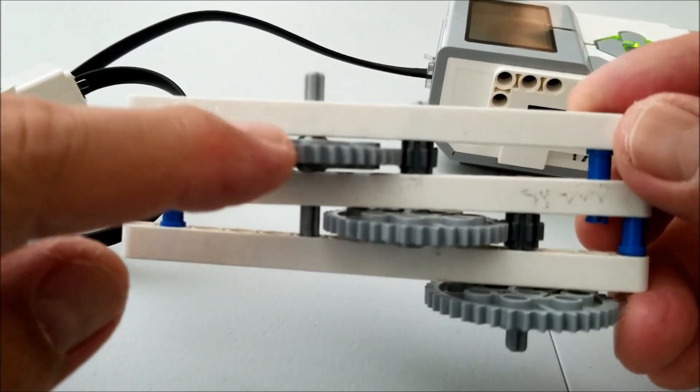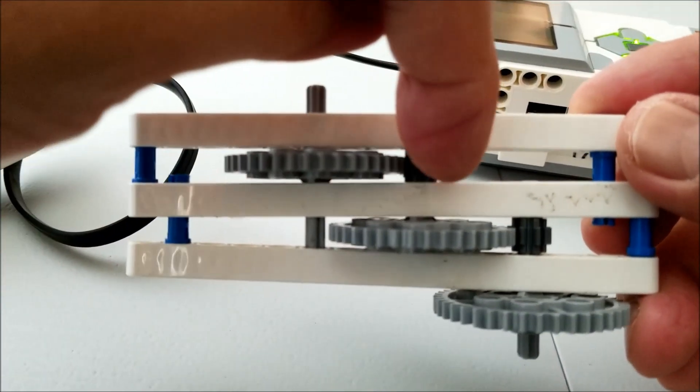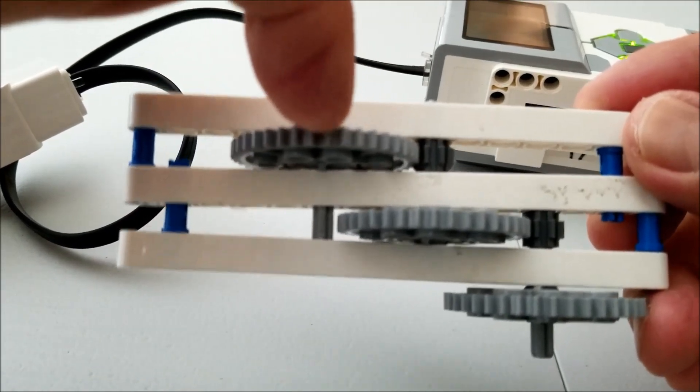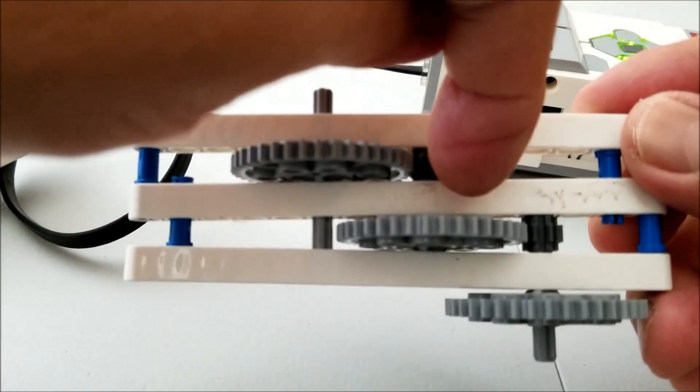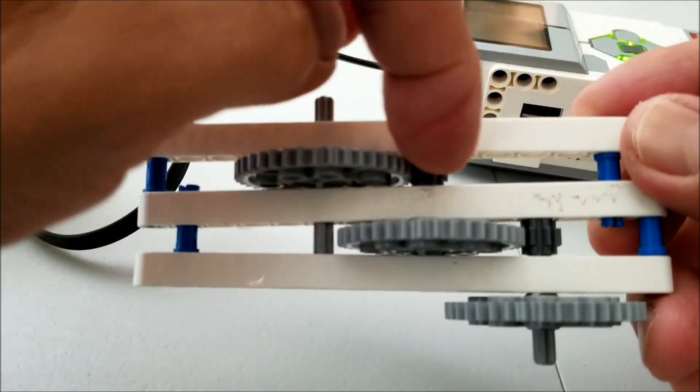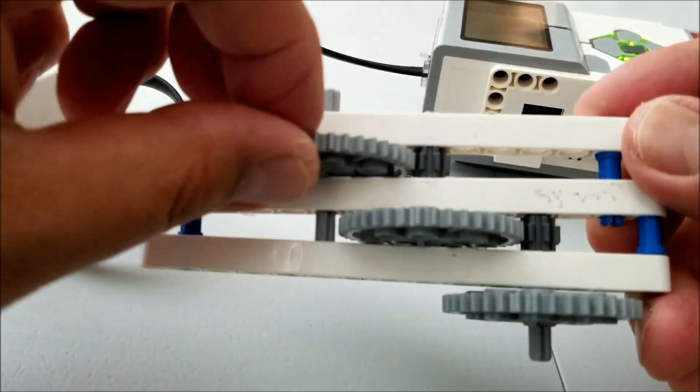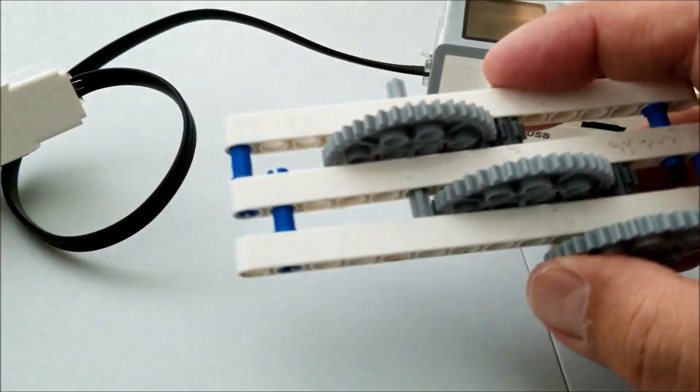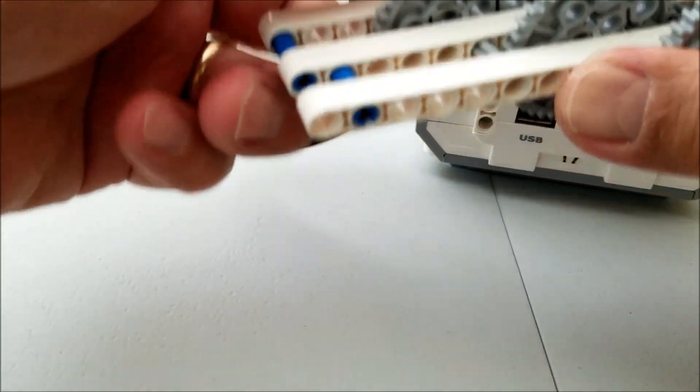Again, this is spinning. This small gear will spin eight times faster than this larger gear because this is 64 teeth and this is eight teeth. So it's a 64 to eight or basically eight to one gear ratio here. So it's just going to be spinning super fast.